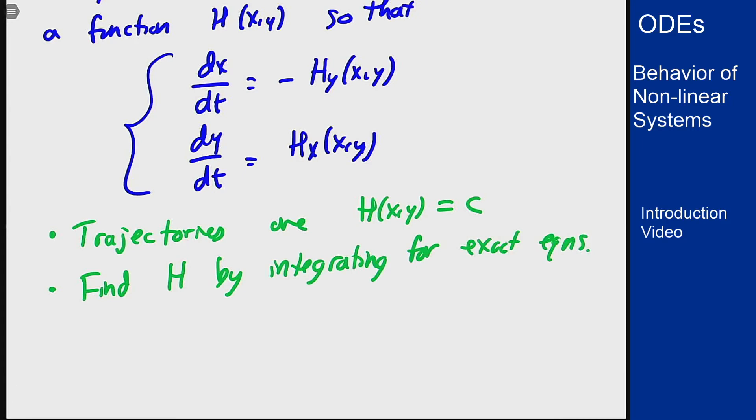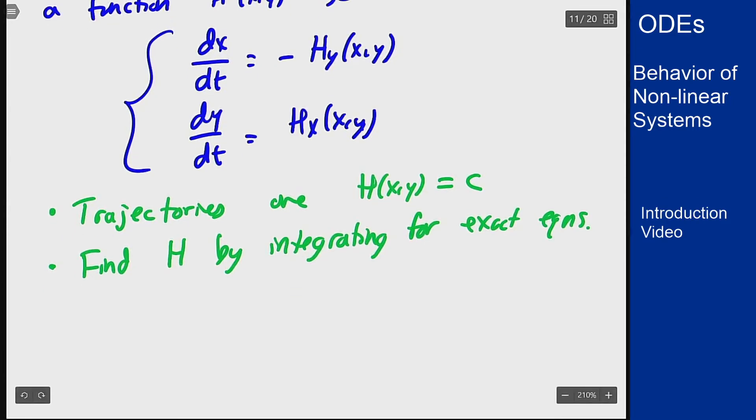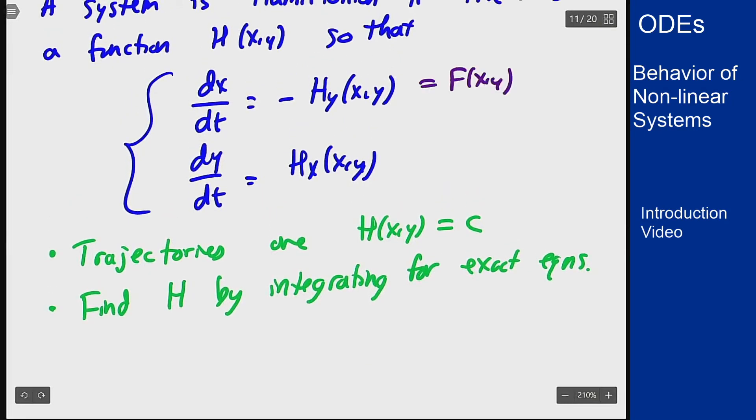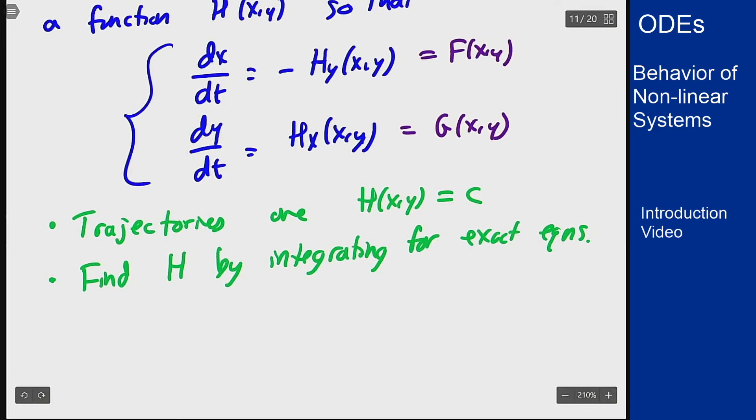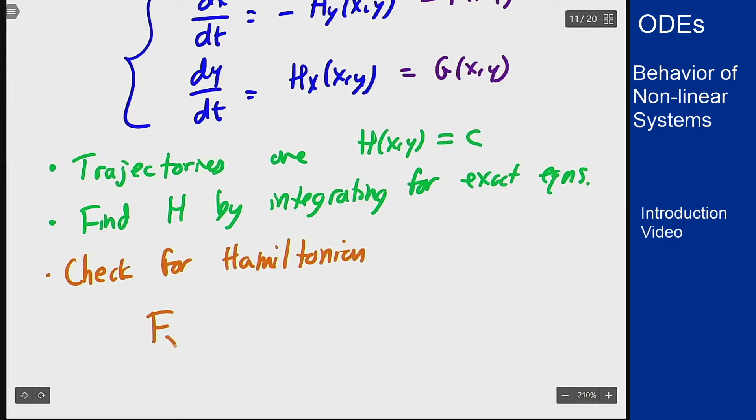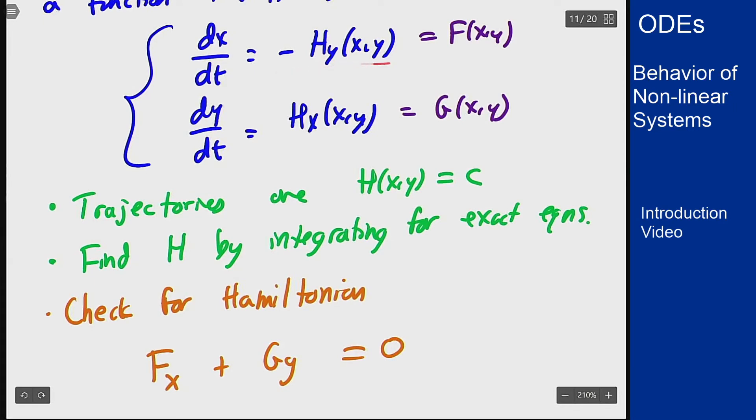What if we don't have H? How do we know it's Hamiltonian? We get a similar check to before. This is my function f, this is my function g. For exact equations I needed the derivative of the first one in y equal the second one in x. But here there's this minus sign. The check for Hamiltonian is that f_x plus g_y equals zero. Differentiate this in x, I get H_xy. Differentiate this in y, I get H_xy. This minus sign means I want to add them together to get to zero. So you can check this fact, see if it's Hamiltonian. If it is, then do the integration stuff from exact equations to figure out what this H is and go from there.